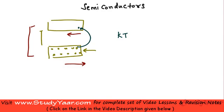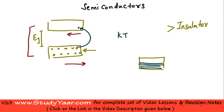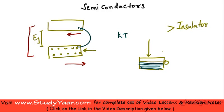In a semiconductor, the band gap is relatively smaller compared to an insulator, so its conductivity is greater. However, unlike conductors or metals, there is still some gap. In conductors, the conduction band is not completely filled and electrons can get excited to the next higher available energy level within the same band, without crossing an energy gap.